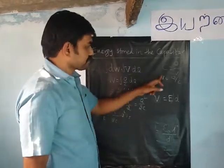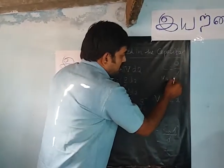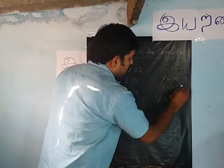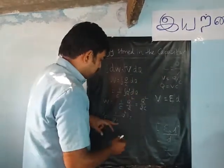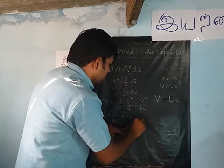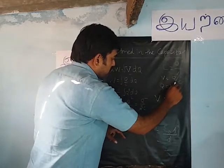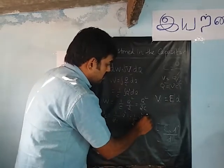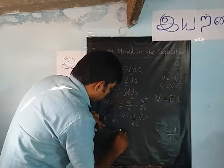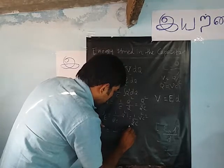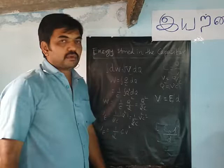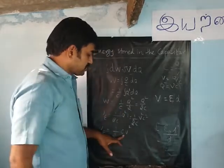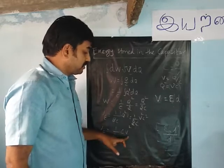From the relation c equal to q by v, we get q is equal to v into c. Substituting q squared equals v squared c squared into 1 by 2c gives u suffix e equal to 1 by 2 c into v squared. So the electrostatic potential energy stored is directly proportional to capacitance c and also to the square of the voltage.